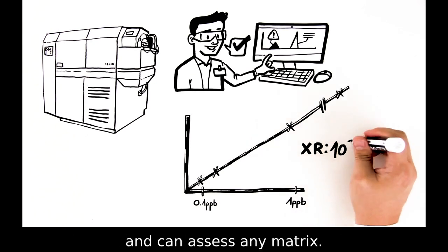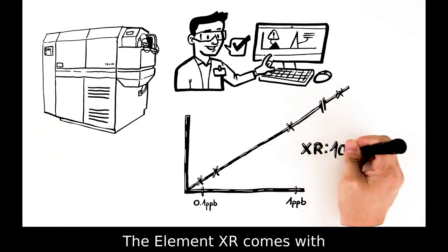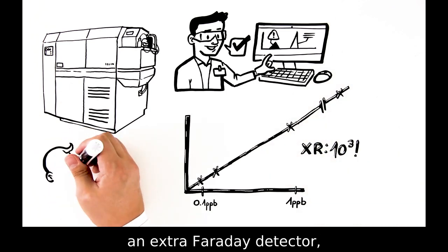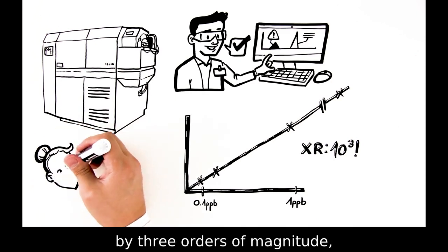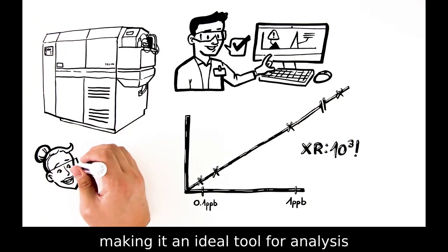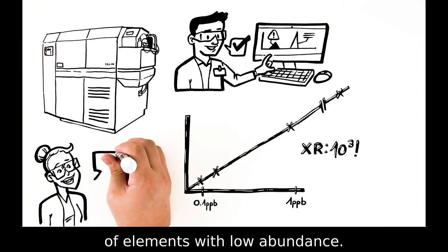The Element XR comes with an extra Faraday detector, extending the dynamic range by three orders of magnitude, making it an ideal tool for analysis of elements with low abundance.